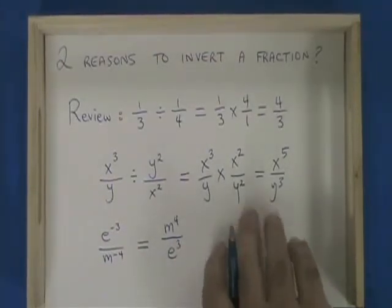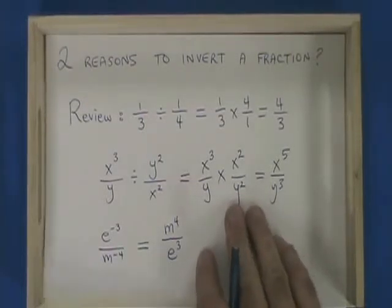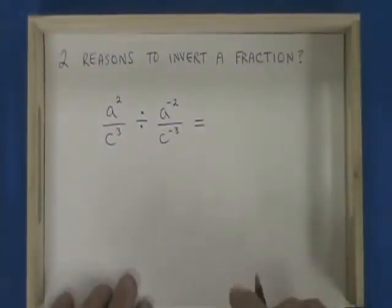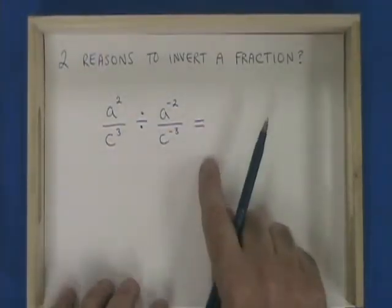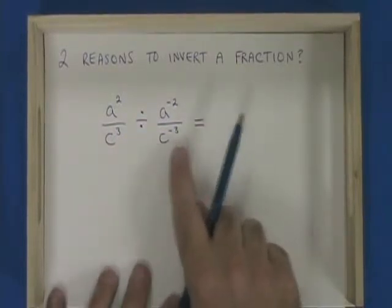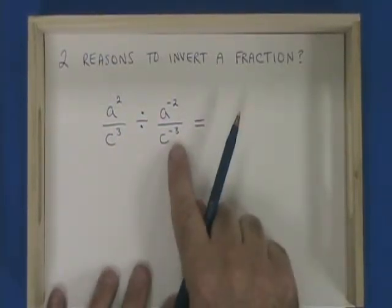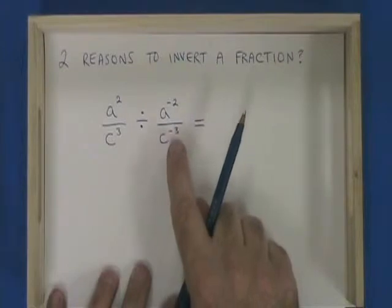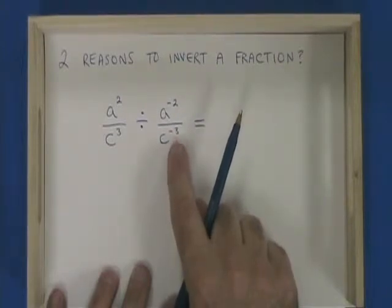Let's look at a question that makes us invert a fraction for both reasons. We have to invert a fraction twice. The first thing I'm going to do when I simplify this expression is I'm going to get rid of those negative signs in my exponents. I'm going to invert the second fraction so that I can convert the negative 2 and the negative 3 into positives.